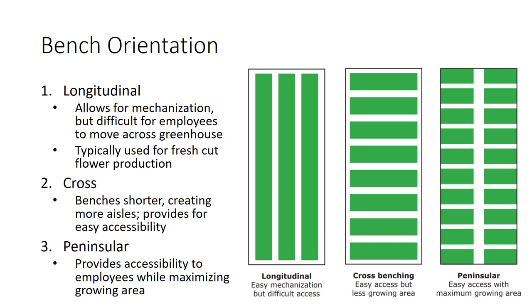For longitudinal arrangement, beds or benches are constructed to run the full length of the greenhouse in several rows, typically used for fresh-cut flower production. This arrangement allows for mechanization but makes it difficult for employees to move across the greenhouse. Cross benching is similar to longitudinal except the benches are arranged crosswise, creating more aisles for easy accessibility, but reducing growing space efficiency. The peninsular bench arrangement has one central aisle running the full length of the greenhouse, providing accessibility while maximizing growing area.